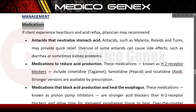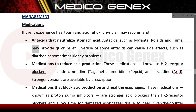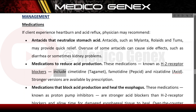Management — medications. If the client experiences heartburn and acid reflux, the physician may recommend antacids that neutralize stomach acid, such as Mylanta, Rolaids, and Tums, which may provide quick relief. However, overuse of some antacids can cause side effects such as diarrhea or kidney problems. Medications to reduce acid production, known as H2 receptor blockers, include cimetidine (Tagamet), famotidine (Pepcid), and nizatidine (Axid). Stronger versions are available by prescription.